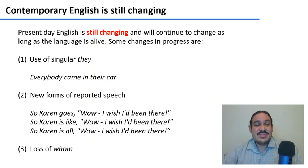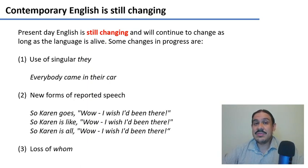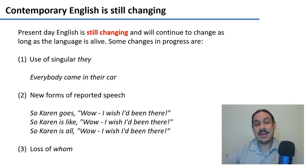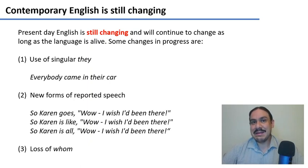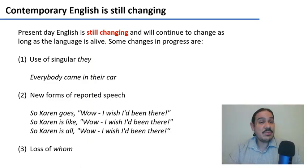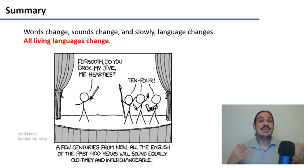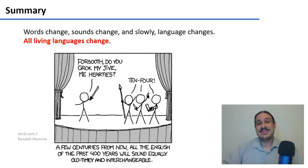Some of the changes in twenty-first century English are, for example, singular 'they' — as in 'everybody came in their car.' You wouldn't hear people saying that a hundred years ago, but now it's a fairly common structure. We have new forms of reported speech: 'And so Karen goes, wow, I wish I'd been there.' 'Karen is like, I wish I'd been there.' 'Karen is all, I wish I'd been there.' A hundred years ago, people would have said 'so Karen said, wow.' We practically don't use 'whom' anymore — 'to whom am I speaking?' Every English speaker in the twenty-first century would say 'who,' unless they're trying to be really pretentious. So language will continue to change, and in four hundred years, English will be completely different from what it is now.